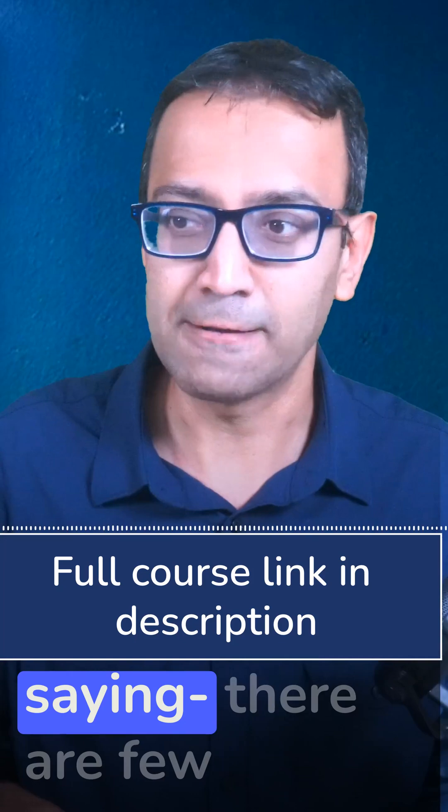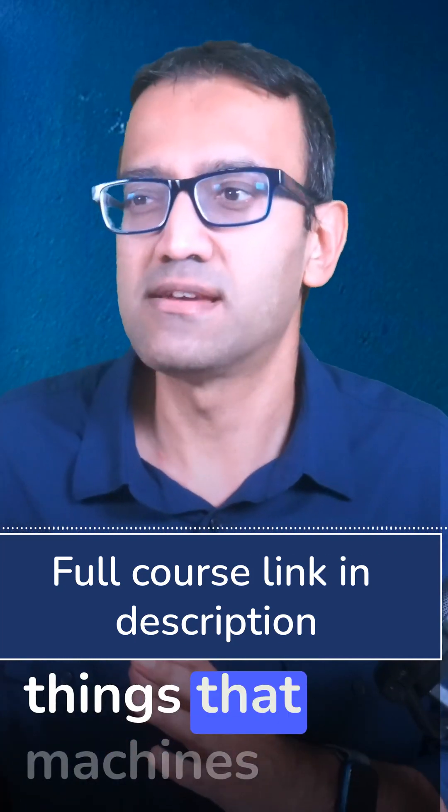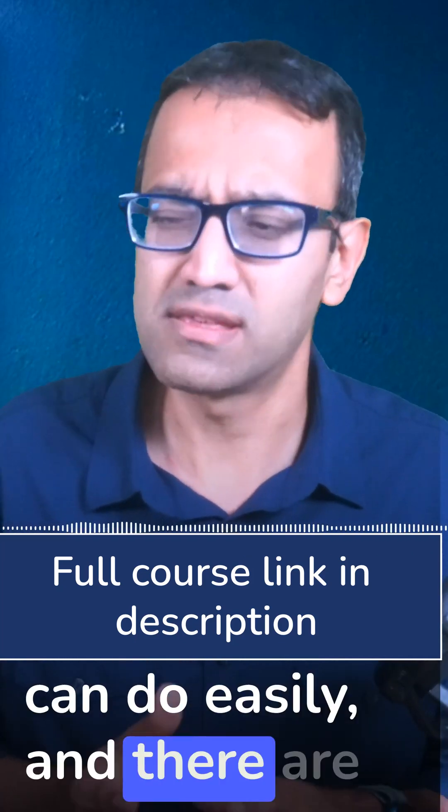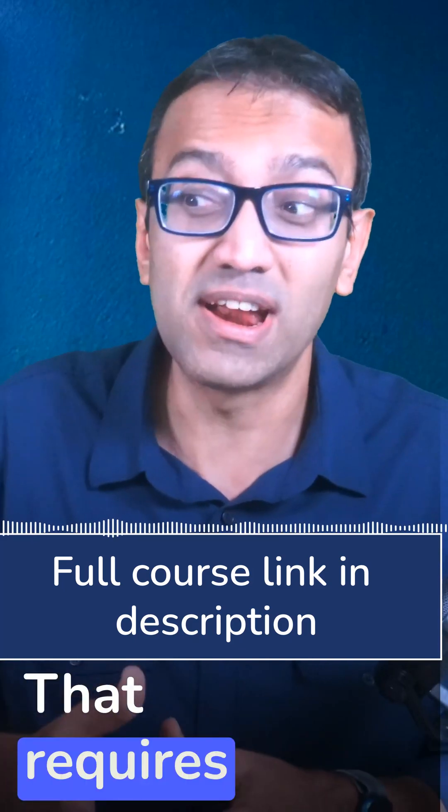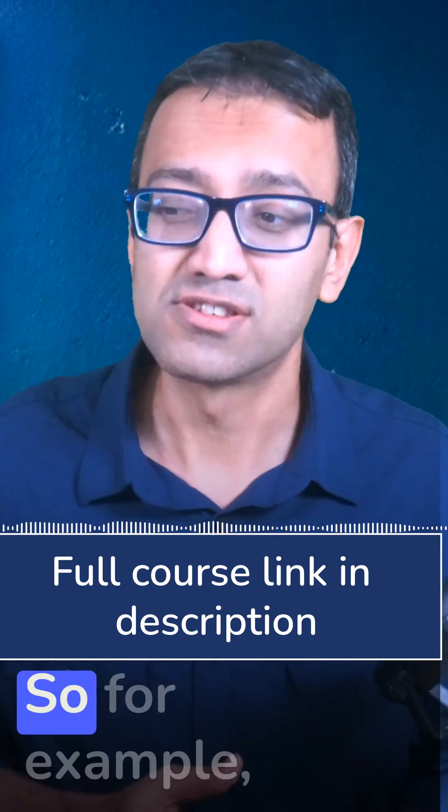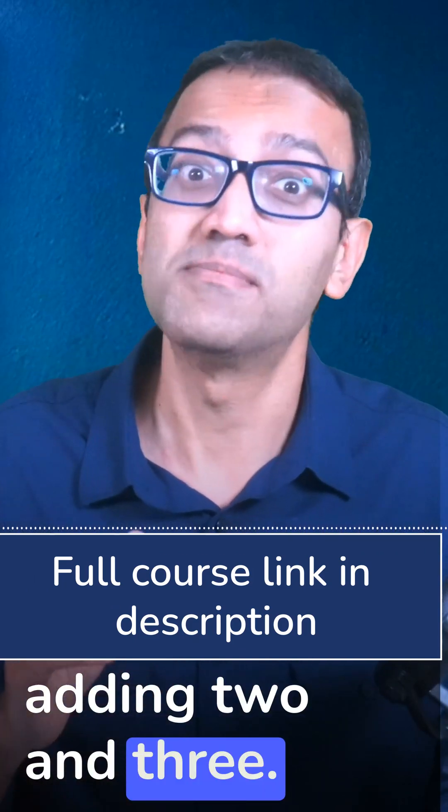Basically, the definition is saying there are few things that machines can do easily, and there are few other things that they cannot do easily that requires human intelligence. So, for example, adding two and three, machines can do that.